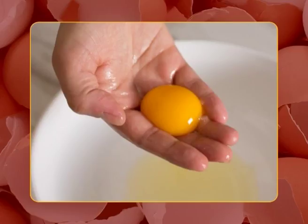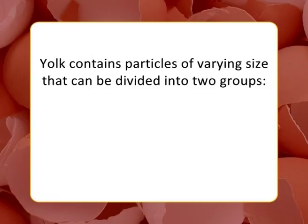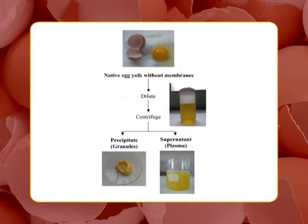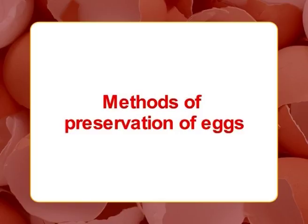Egg yolk is a fat-and-water emulsion with about 50 percent dry weight matter. The principal constituents of egg yolk solids are 65 percent lipids, 31 percent proteins, and 4 percent carbohydrates, vitamins, and minerals. Yolk contains particles of varying size divided into two groups: yolk droplets and granules. Yolk droplets have a diameter in the range of 20 to 40 micrometers, consist mostly of lipids with protein membranes, and are a mixture of lipoproteins with low-density lipids.